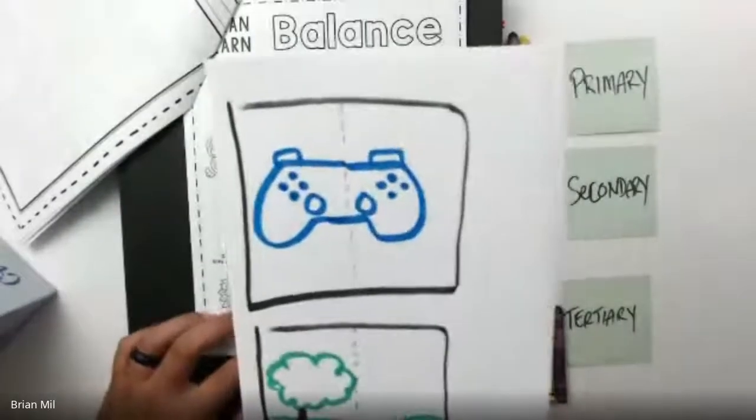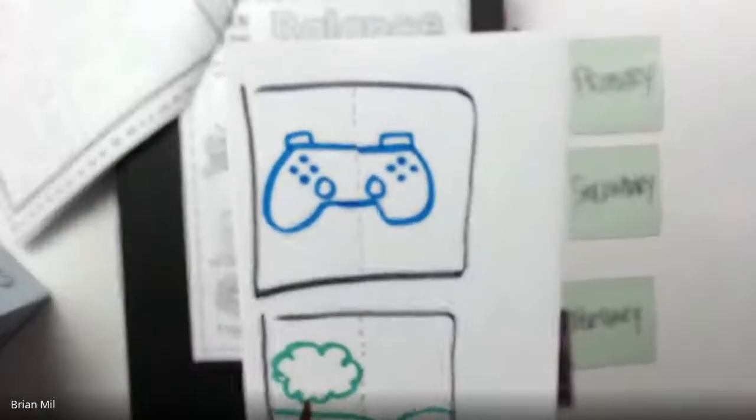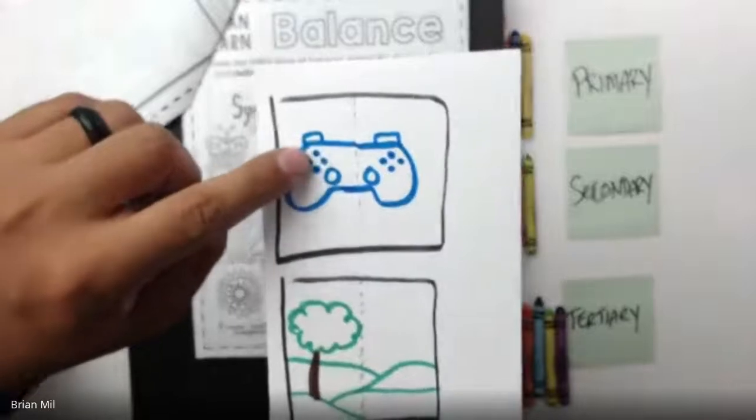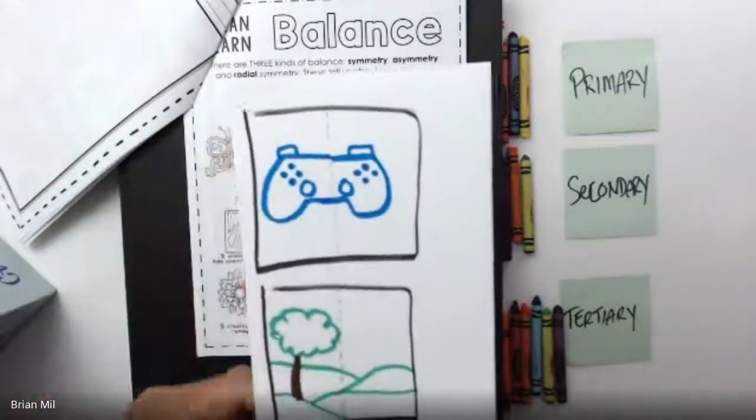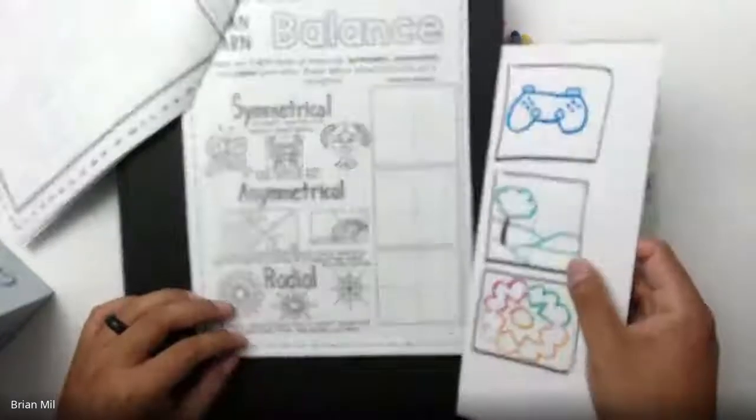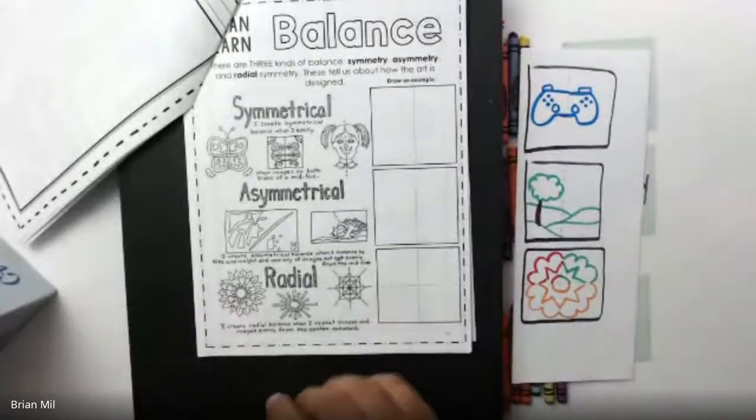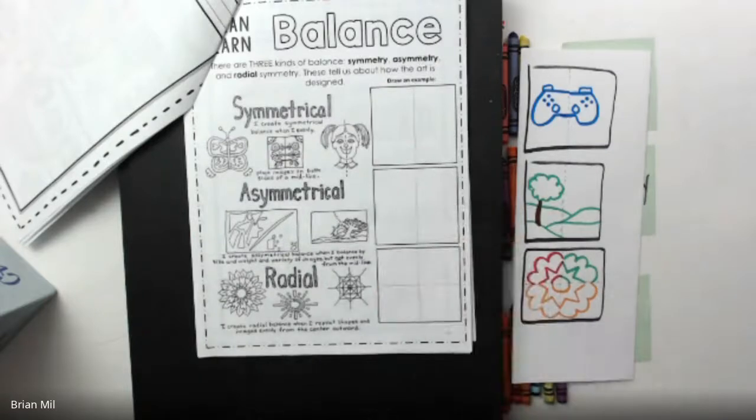I used the game controller as an example, but I noticed when I was going midway through, game controllers are not symmetrical because you have the d-pad or the little cross sign on one side but then the four buttons on the other side. So you're going to have to do something else.